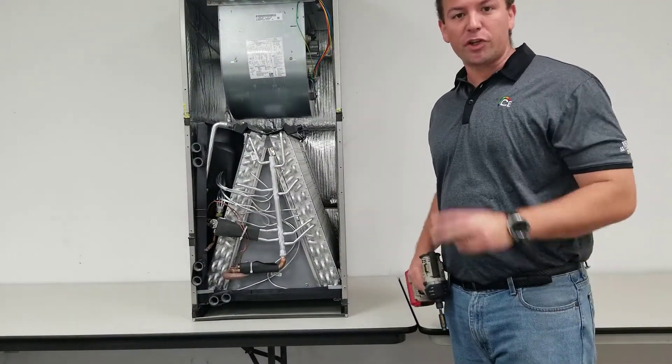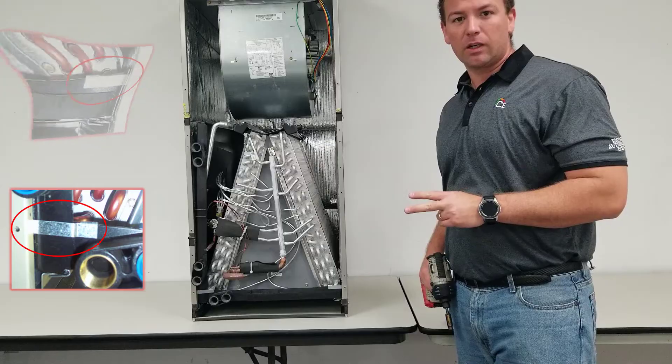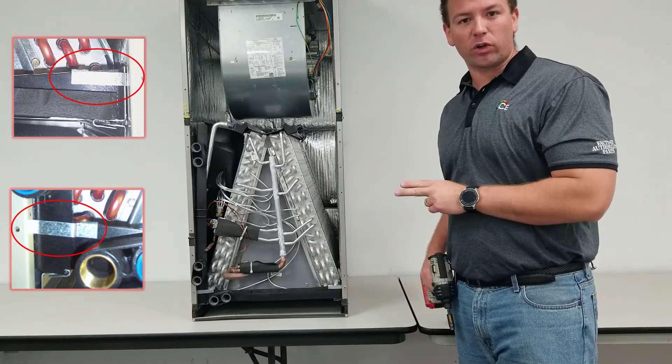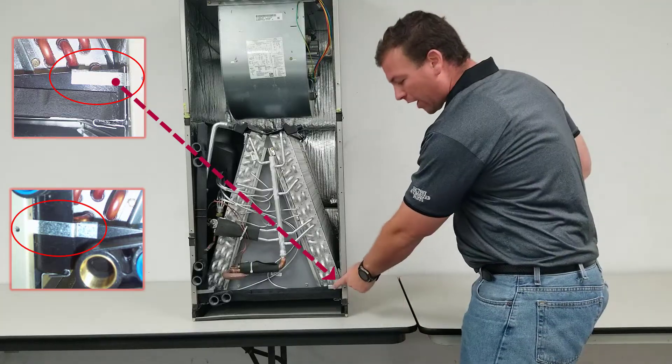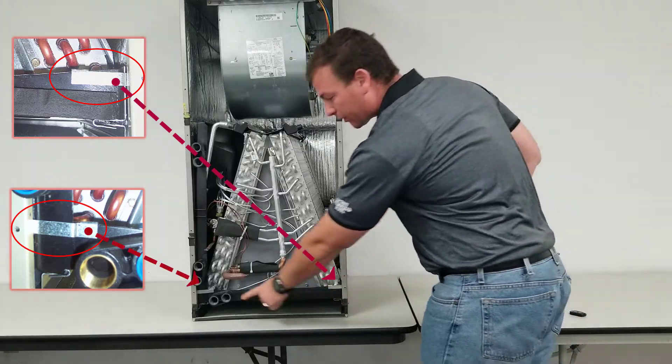Make sure you remove the two retaining clips before you do the horizontal right conversion. Make sure they get reinstalled afterwards. You have one on each side of the coil.